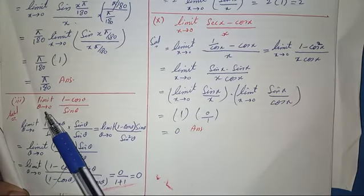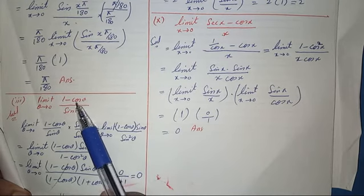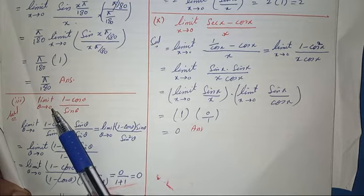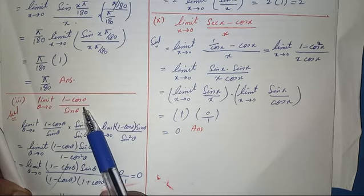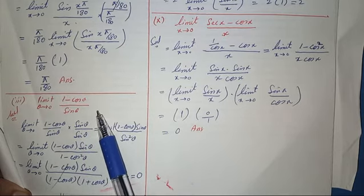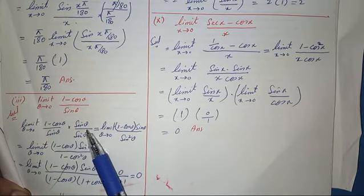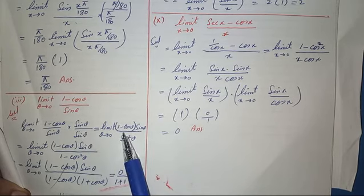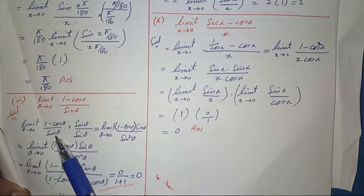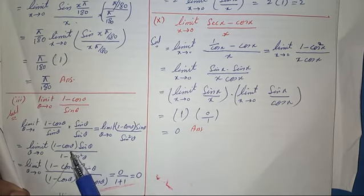Third part of question number 3: limit theta tends to 0 of (1 minus cos theta) over sine theta. This trigonometric limit can be evaluated using at least 3 methods. One approach uses half-angle formulas. Another method multiplies numerator and denominator by sine theta, giving sine theta times (1 minus cos theta) over sine squared theta.